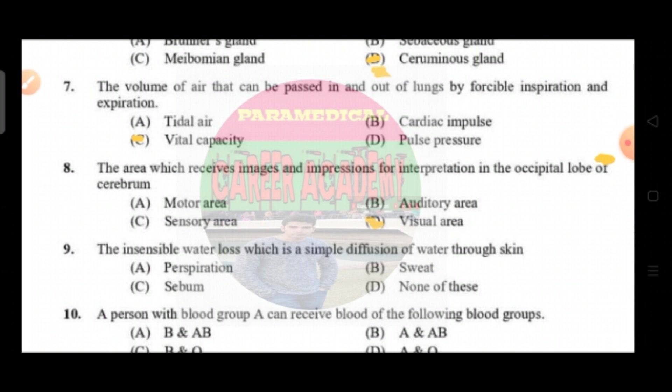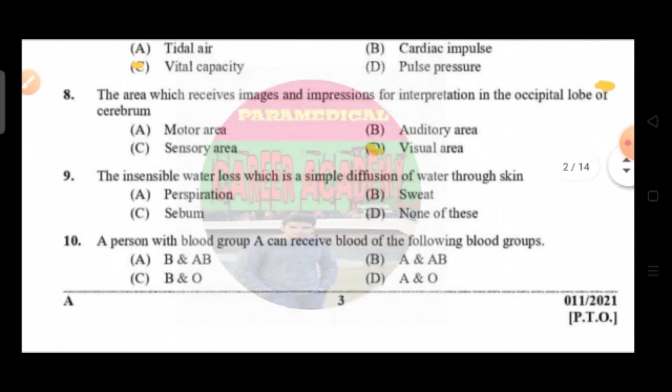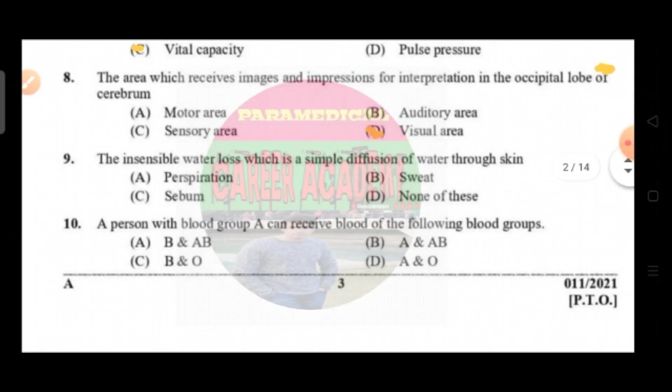Question number seven: the volume of air that can be passed in and out of the lungs by forcible inspiration and expiration. Option A is tidal air, option B is cardiac impulse, option C vital capacity, option D is impulse pressure. The correct answer is option C, that is vital capacity.